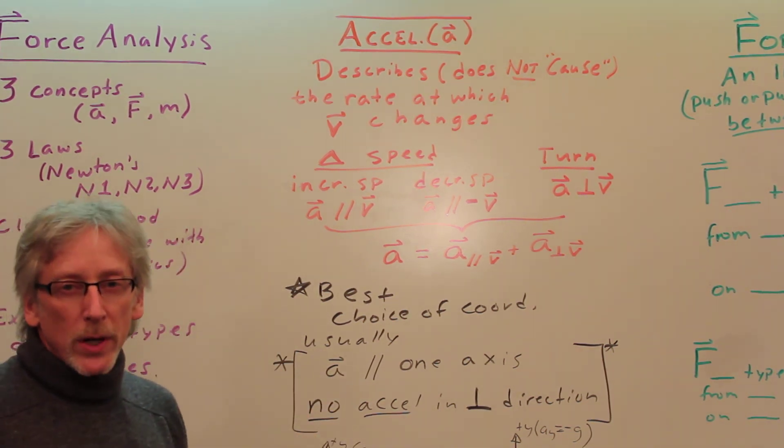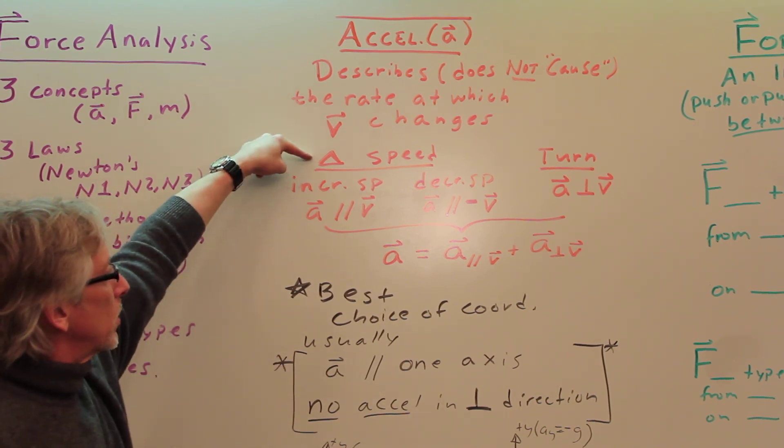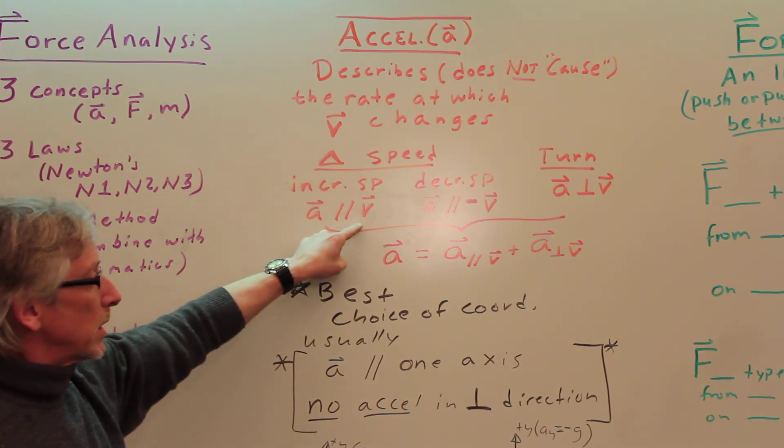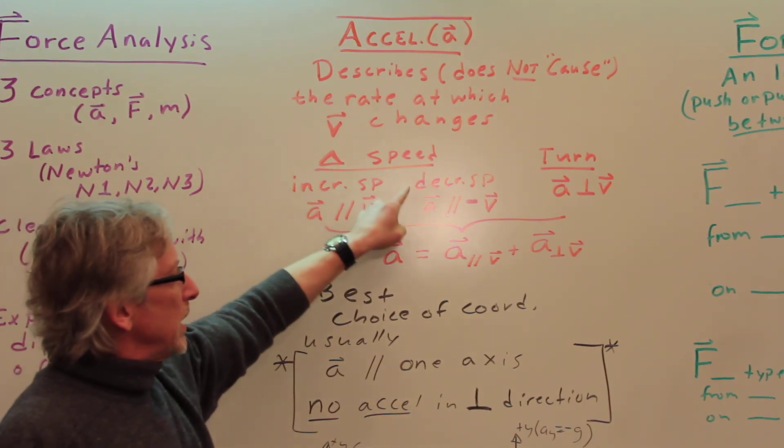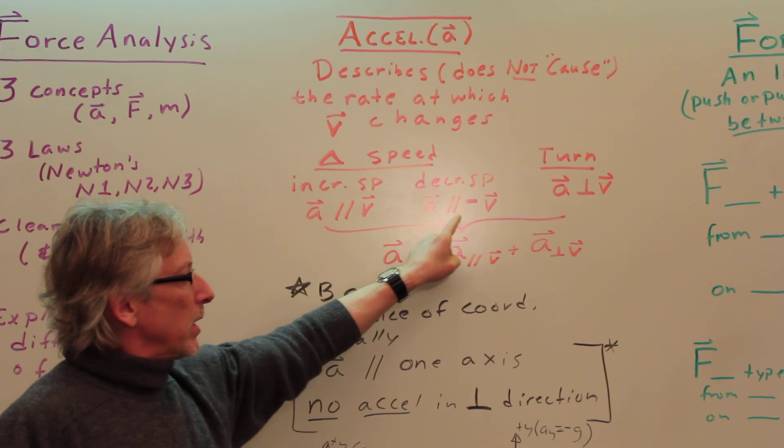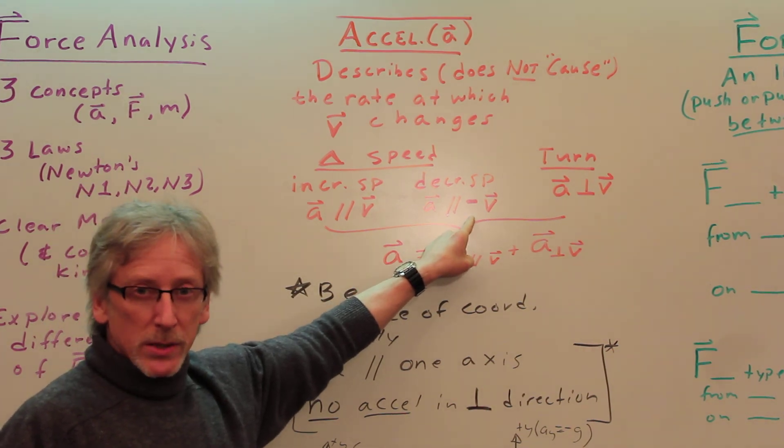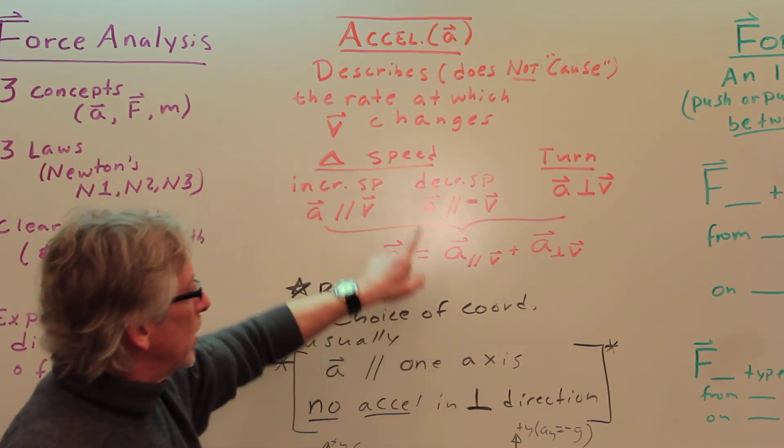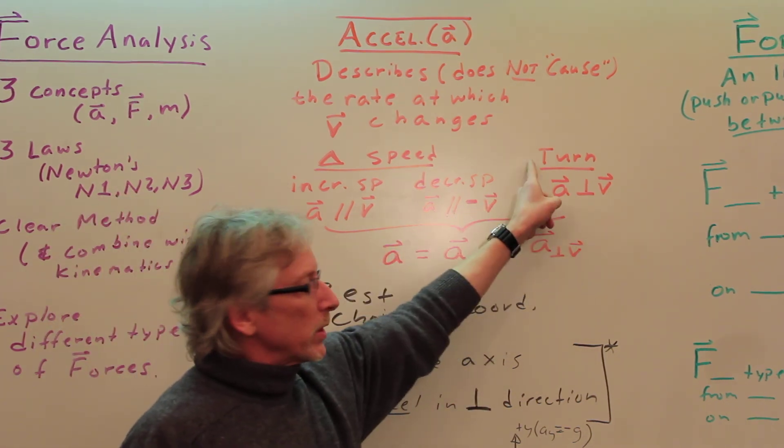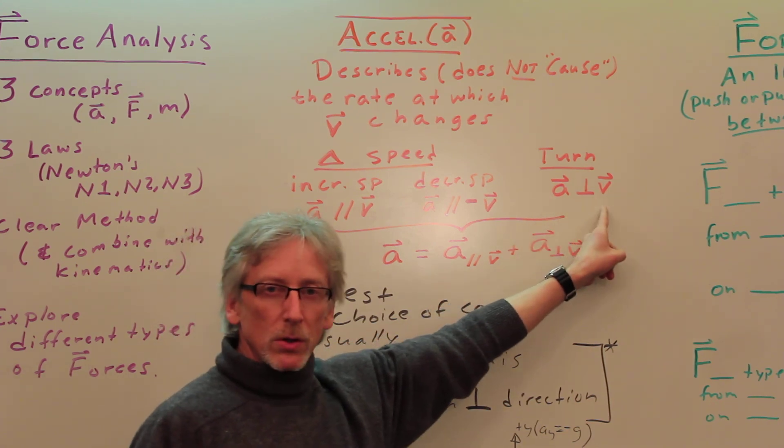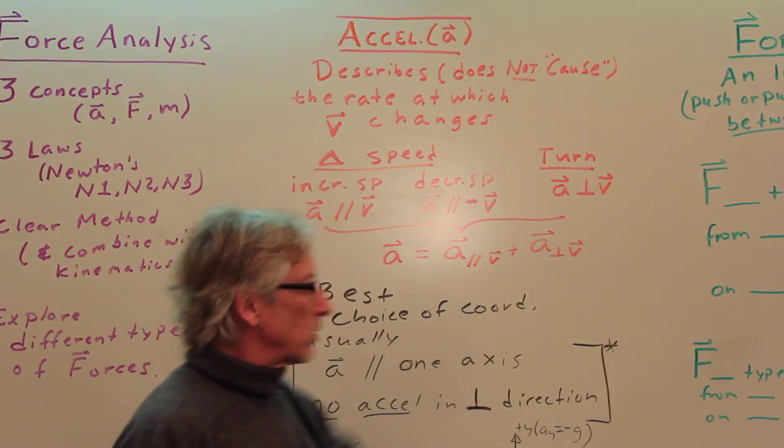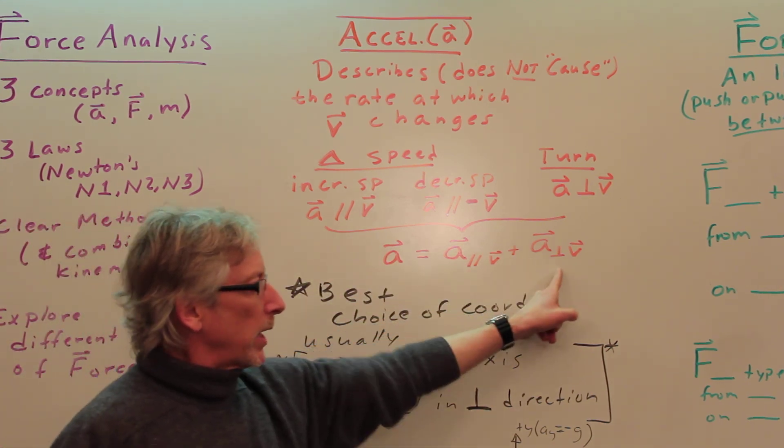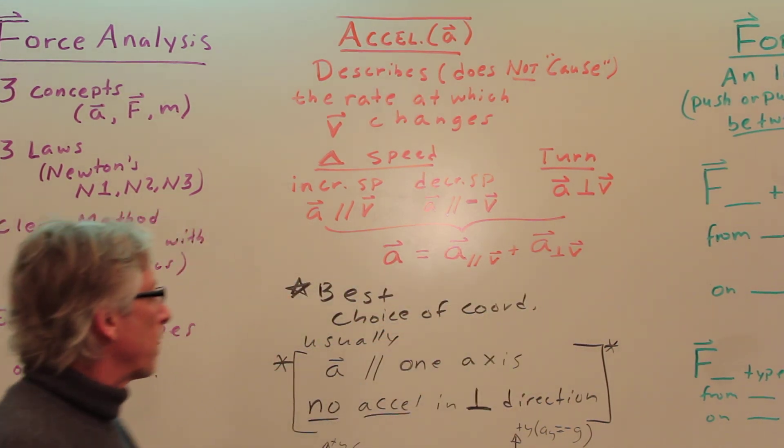You can have the same acceleration, but for many different reasons. You can change speed, increase speed. Remember that A is parallel to the velocity. For decreasing speed, your A is opposite the velocity, which might be in the positive direction. You could turn. If you're only turning and not changing speed, you have acceleration perpendicular to the velocity and into the circle. In general, the acceleration, you can change speed and you can turn at the same time.